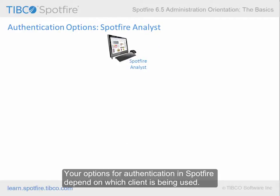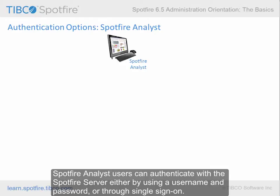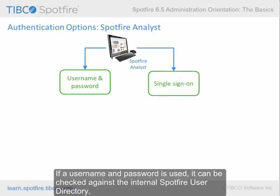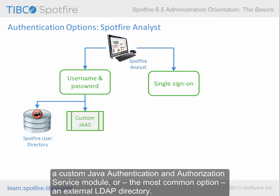Your options for authentication in Spotfire depend on which client is being used. Spotfire Analyst users can authenticate with the Spotfire server either by using a username and password, or through single sign-on. If a username and password is used, it can be checked against the internal Spotfire user directory, a custom Java authentication and authorization service module, or — the most common option — an external LDAP directory.